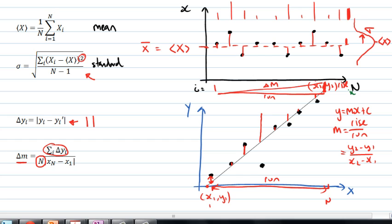Remembering that this uncertainty of the slope delta m is going to be either above the original slope m or below the original slope m. It's plus or minus delta m.